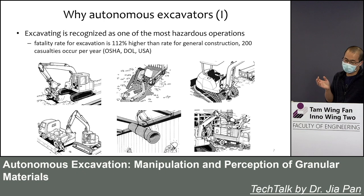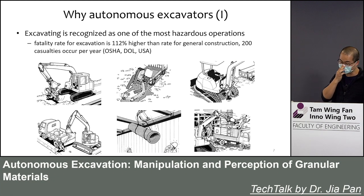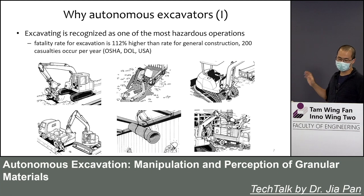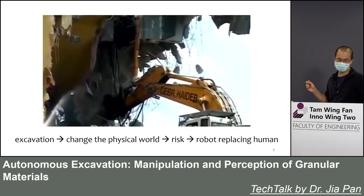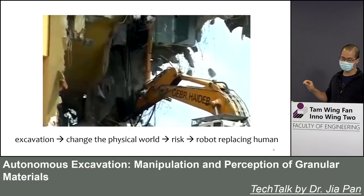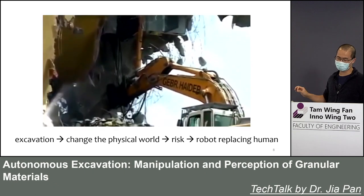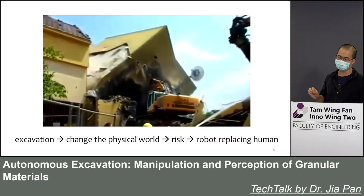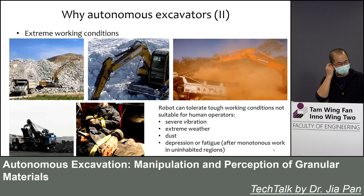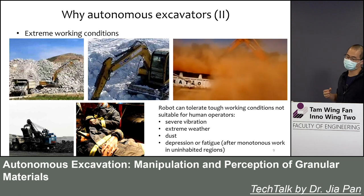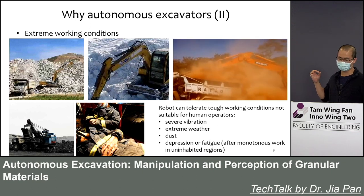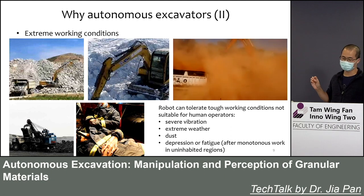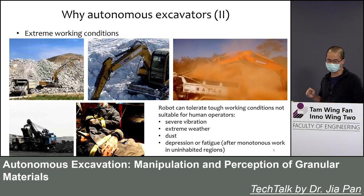Why do we need to develop autonomous excavators to replace human operators? The first reason is that excavation is very dangerous — it has a very high fatality rate. The excavator can hurt human workers in many ways, since it wants to change the physical world and many of those changes can be risky, so we want to replace humans with robots. The second reason is that autonomous excavators can work in extreme conditions difficult for humans, like environments with severe vibration, extreme weather, severe dust, or conditions that lead to depression and fatigue.